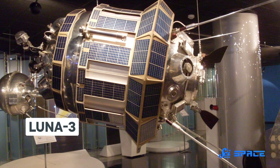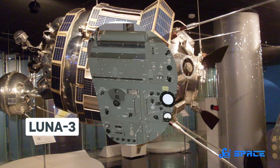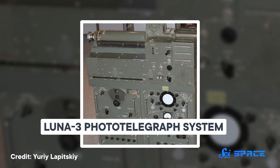Luna 3 took pictures just like how we would take them on Earth back then, with a camera and film processing equipment. But the impressive part is that the spacecraft then sent those pictures to Earth using electrons.